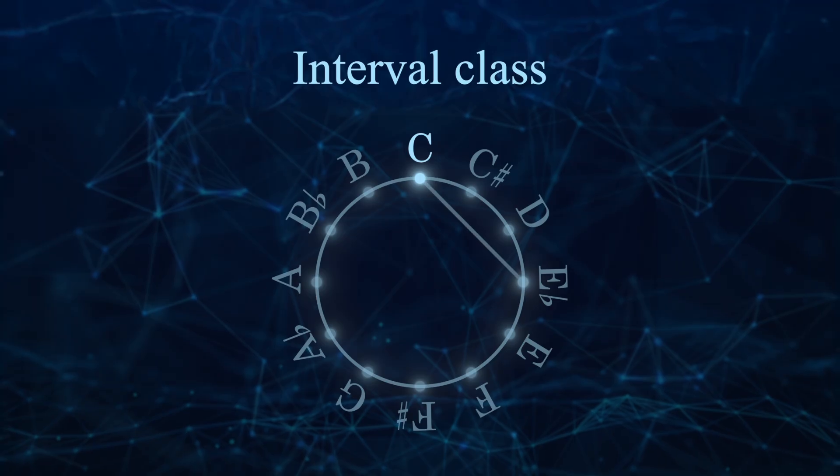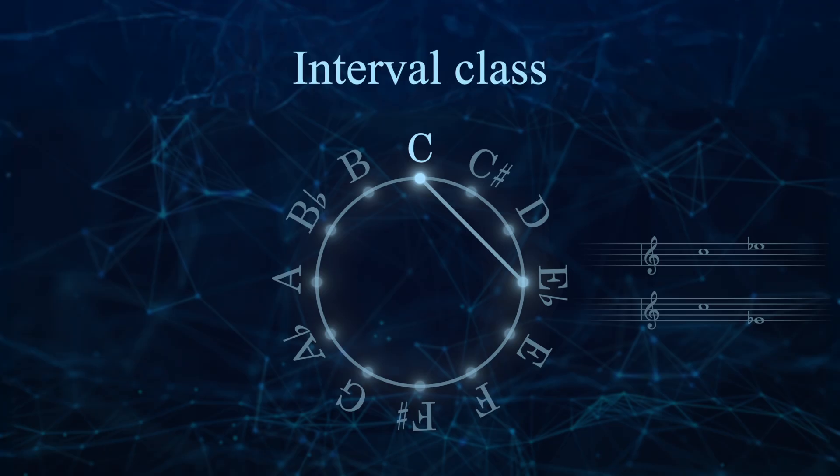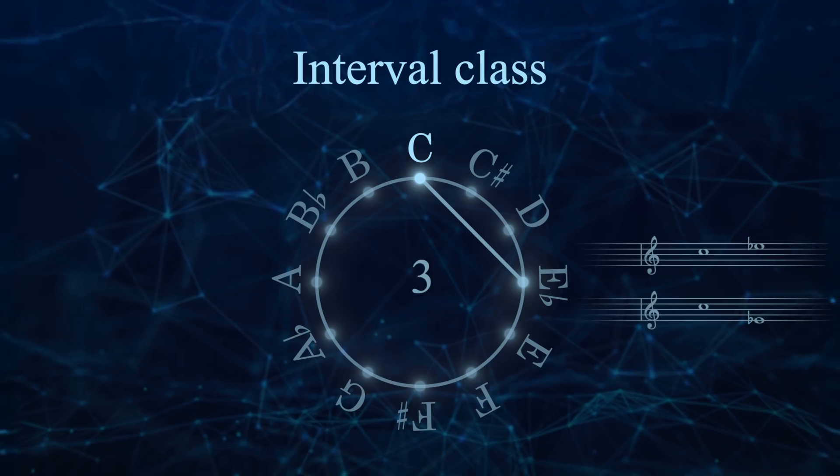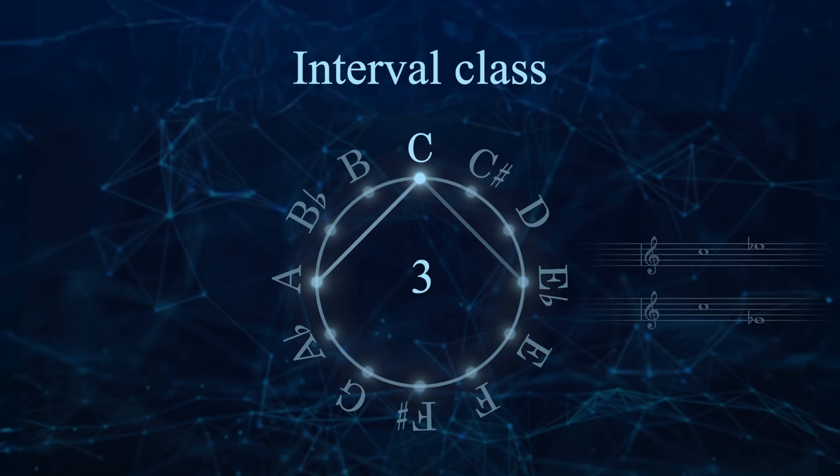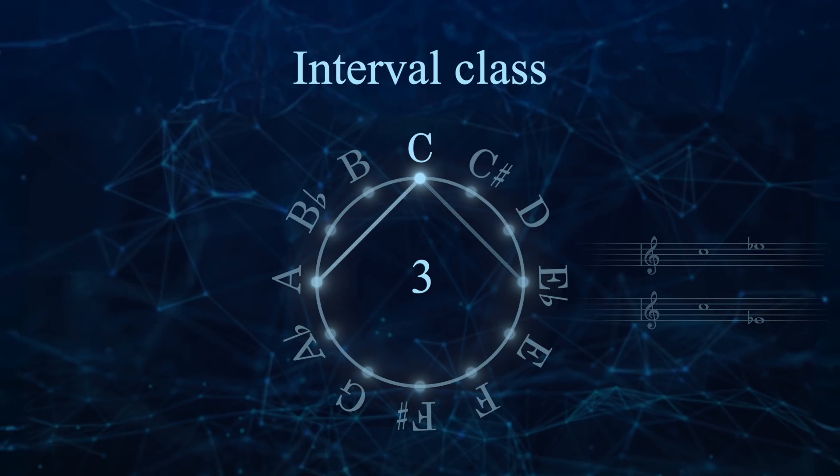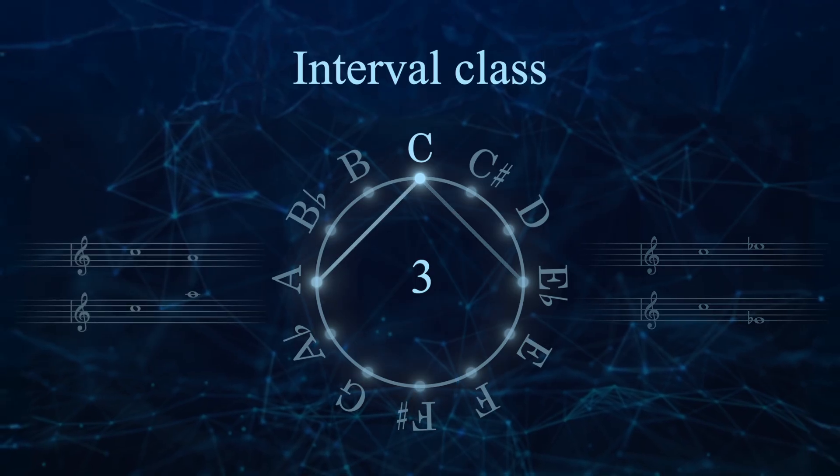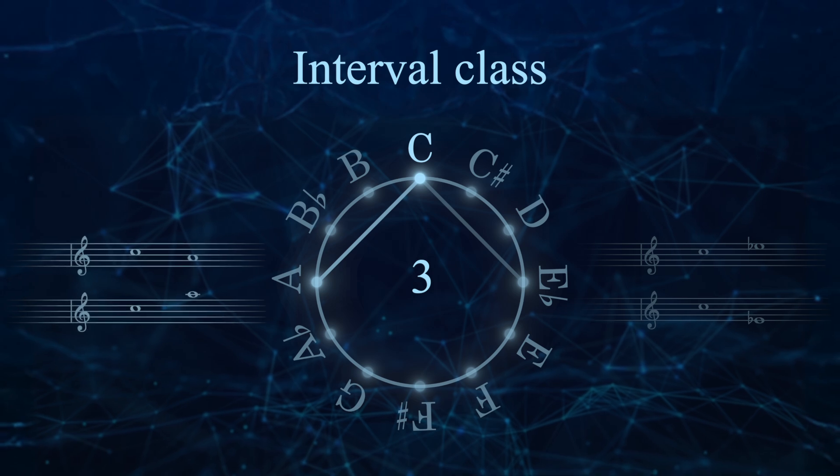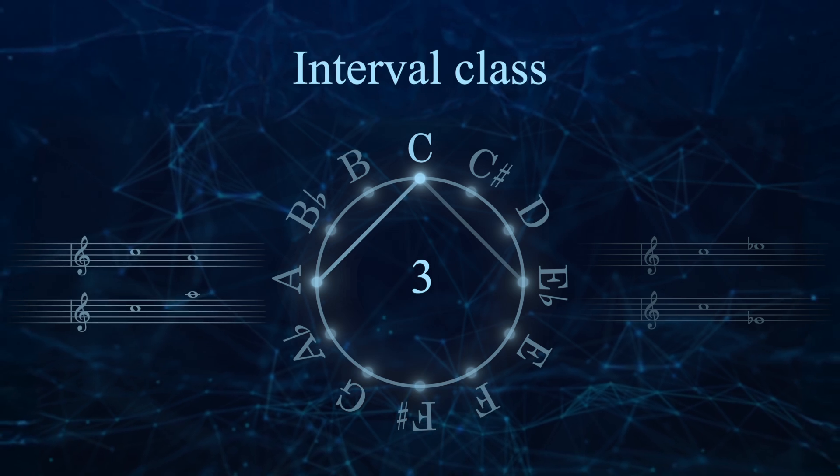Since C and Eb are separated by three semitones, any C going to any Eb is a distance of interval class 3. C and Eb are also separated by three semitones, so any C going to any Eb is also interval class 3.